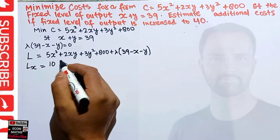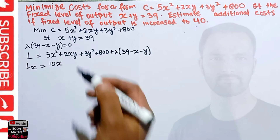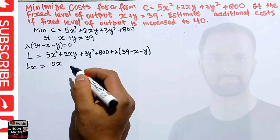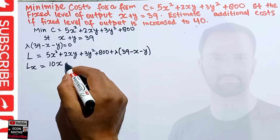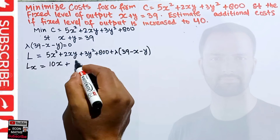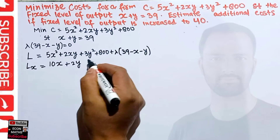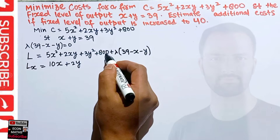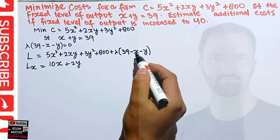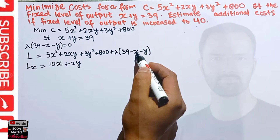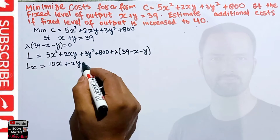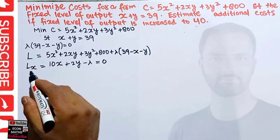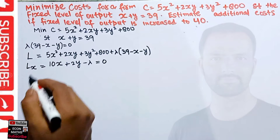You can find videos on differentiation rules in this channel. The derivative of the 2xy term with respect to x gives 2y. The third term has no x so its derivative is zero. The constant 800 also gives zero. The derivative of −x with respect to x is −1, so we get −λ = 0. The first equation is: 10x + 2y − λ = 0.